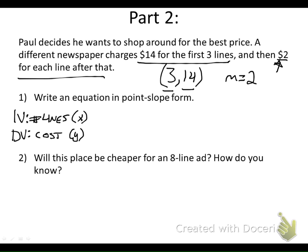If we come back to our point-slope form of a line, we can write this equation. We just have to remember that this given point is our X1 and our Y1, and this is our M value or our slope. So we've got Y minus my Y value of 14 from the ordered pair that we were given, equals our slope, $2 per line, times X minus X1, which is our 3. So Y minus 14 equals 2 times X minus 3.